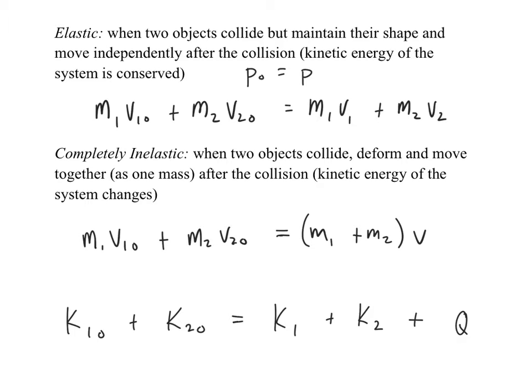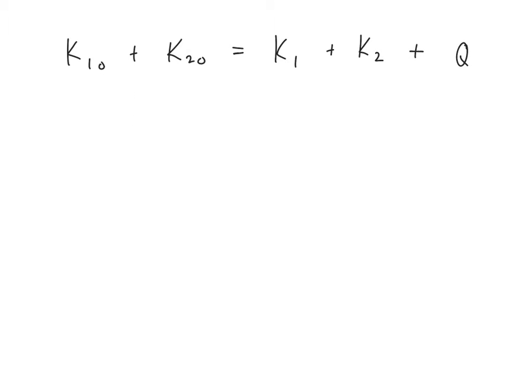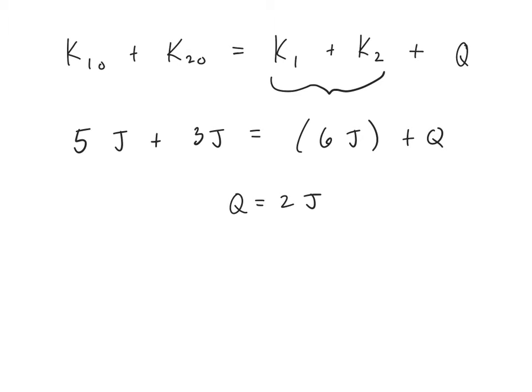One scenario is when two objects collide and we lose kinetic energy because they stick together. For example: 5 joules + 3 joules initially, but afterward the lumped object only has 6 joules. We started with 8 joules and ended with 6 joules, so Q equals 2 joules — that's the energy lost. This is an inelastic collision, as opposed to an explosion.